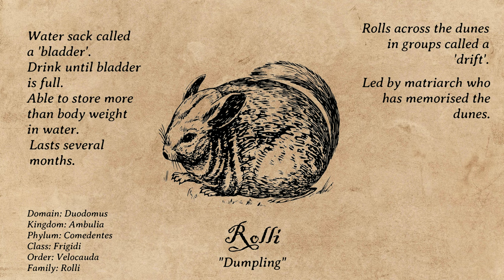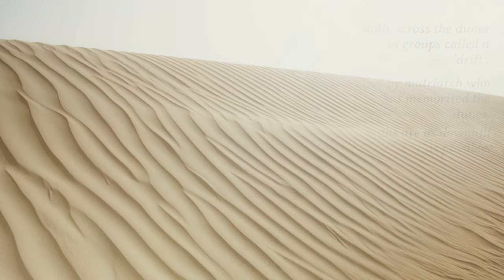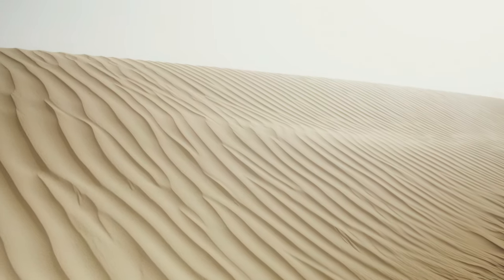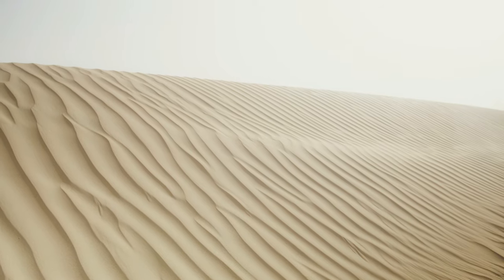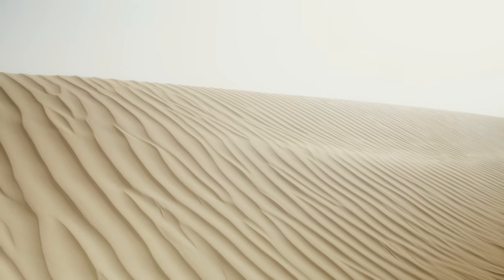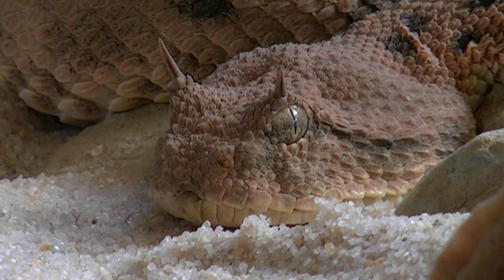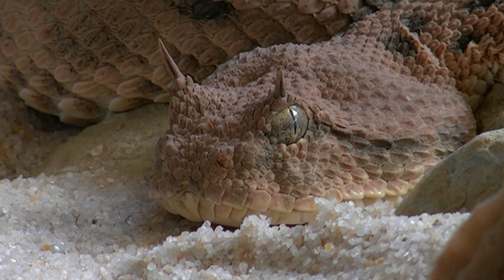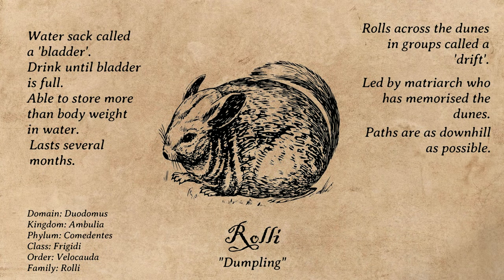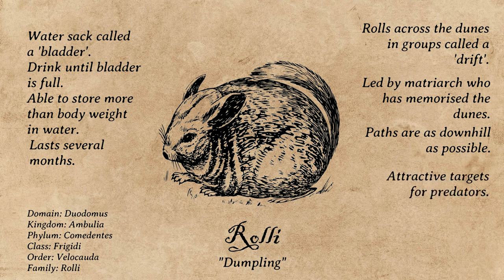Given their unique method of movement, paths tend to be as downhill as possible, and getting stuck within a dune valley can be very dangerous for rolli, separating them from the drift and leaving them exposed to predators as they slowly waddle their way back to the path. They present attractive targets to predators, not just for food, but also for hydration.